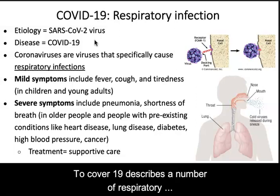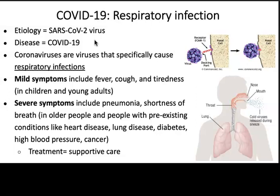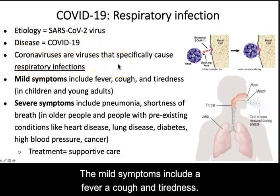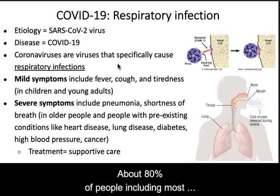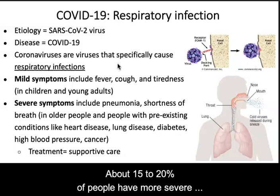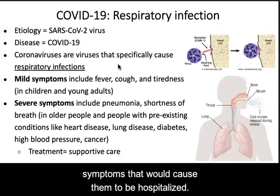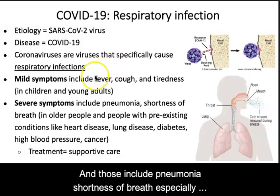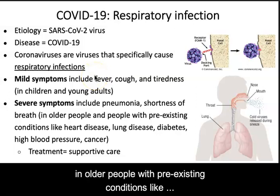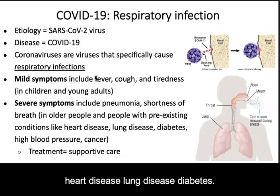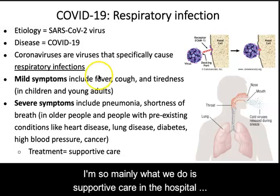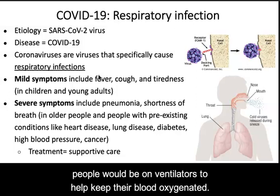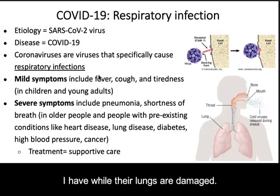COVID-19 describes a number of respiratory symptoms caused by this virus. The mild symptoms include a fever, a cough, and tiredness — those are the typical symptoms seen in about 80% of people, including most children and young adults. About 15 to 20% of people have more severe symptoms that would cause them to be hospitalized, including pneumonia and shortness of breath, especially in older people with pre-existing conditions like heart disease, lung disease, diabetes, high blood pressure, and cancer. We don't have a pharmaceutical treatment for this — there's no medicine that's shown to be effective — so mainly what we do is supportive care. In the hospital, people would be on ventilators to help keep their blood oxygenated while their lungs are damaged.